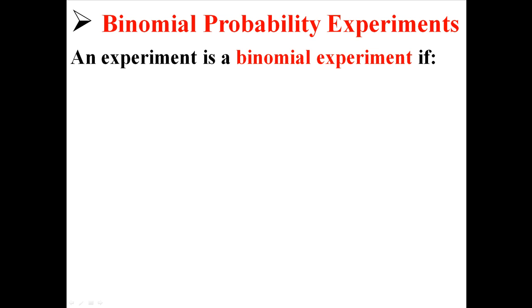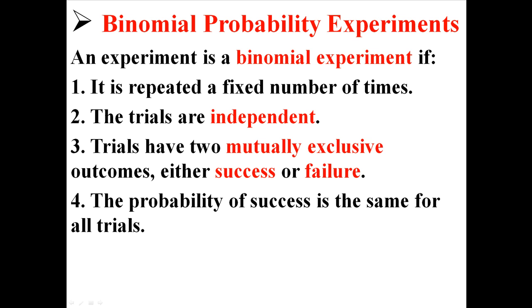Remember that an experiment is a binomial probability experiment if it meets these four criteria. It has to be repeated a fixed number of times, it has to have independent trials, the trials have to be two mutually exclusive outcomes with either success or failure, and the probability of success has to be the same for all trials.